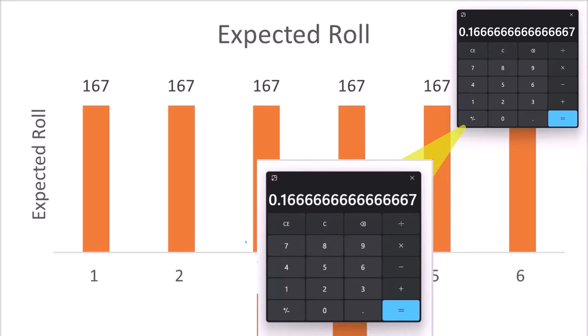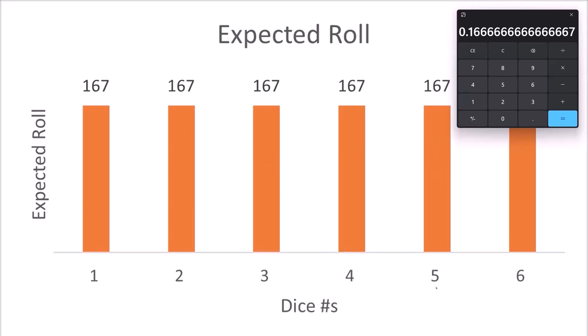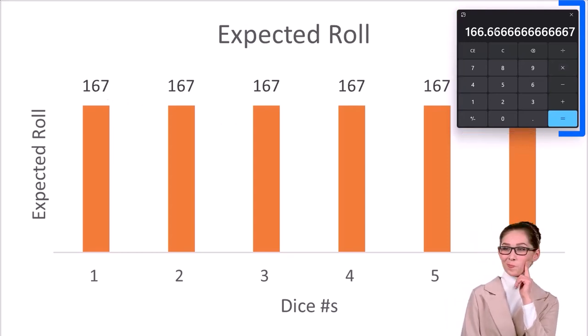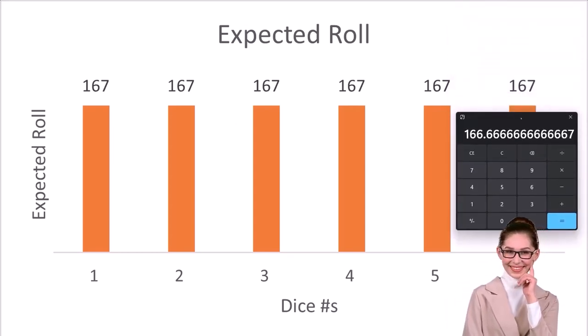So if I rolled one die, you would expect it to be one over six. That's the likelihood: 16.66 percent that it's going to be either a one, two, three, four, five, or six. If I rolled the die a thousand times, then what would you expect to happen? That times a thousand, you would expect to have about 167 of each number rolled. That would be what you would expect.